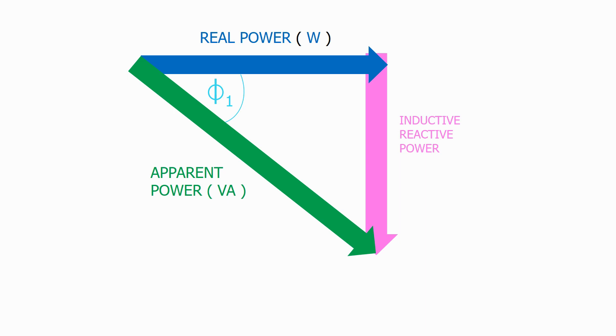Let's now show what level of capacitive reactive power we need to achieve this. Here's the power triangle for an existing electrical network with a power factor of phi1.